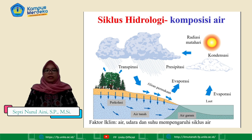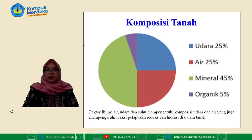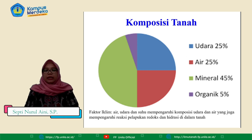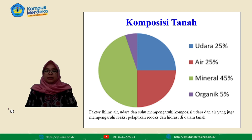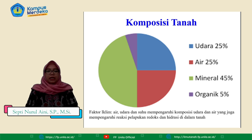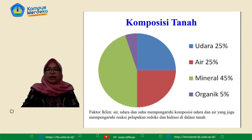Tanaman juga di sini melakukan transpirasi. Komposisi tanah ini terdiri dari 25% udara, 25% air, 45% mineral, dan 5% organik. Faktor iklim yang terdiri dari air, udara, dan suhu akan mempengaruhi komposisi udara dan air, yang juga mempengaruhi reaksi pelapukan redoks dan hidrasi di dalam tanah.